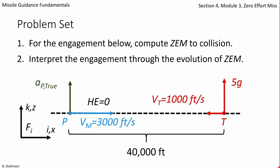As an exercise, let's revisit our engagement of the accelerating target where the pursuer and target are initially on a head-on collision. Compute zero effort miss to collision, and then interpret the engagement through the evolution of zero effort miss.